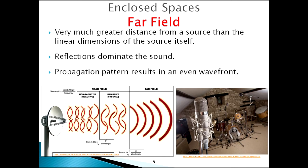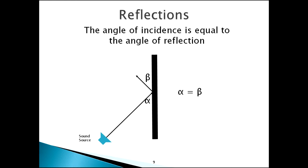When you're dealing with the free field, that's great for theory, but it doesn't really apply to most of our everyday life situations. When looking at these reflections, the angle of incidence is equal to the angle of reflection - basically, when sound hits a surface, it bounces off at exactly the same angle but in the opposite direction. So if your sound hits the wall, it's going to bounce off at the same angle. This works well in theory with a nice flat surface.